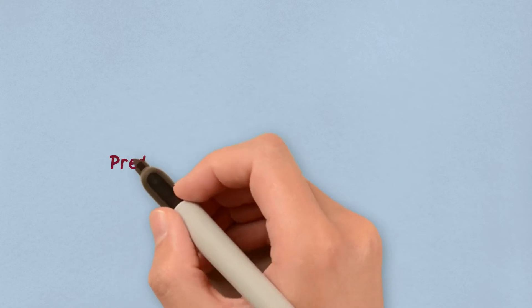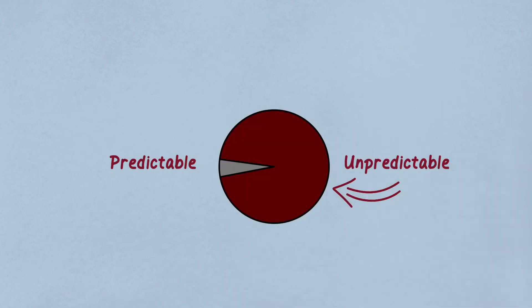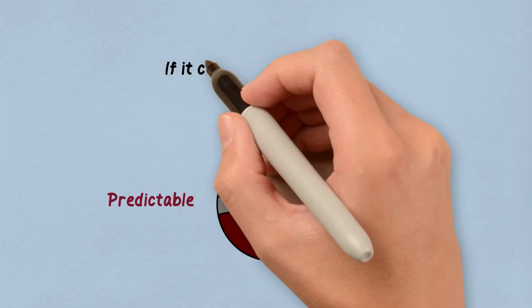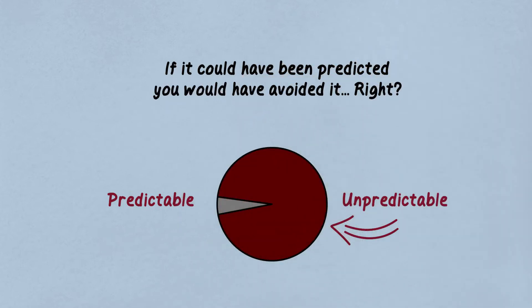Outages can be classified as either predictable or unpredictable. Today, you probably think of most incidents that disrupt availability as unpredictable. Why is this? If it could have been predicted, you would have indeed avoided it, right? And if you did not avoid it, then it is normal to think of it as unpredictable.